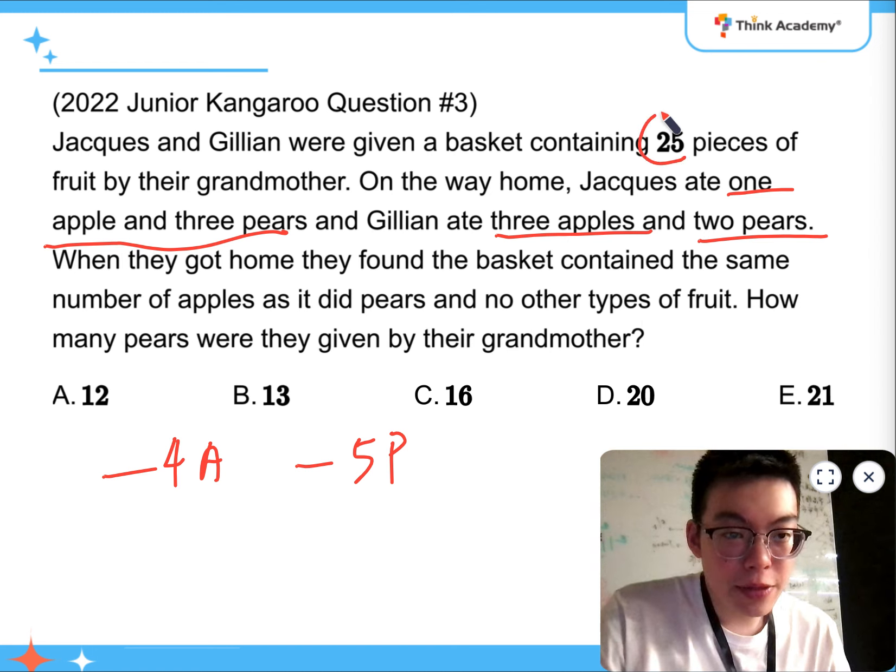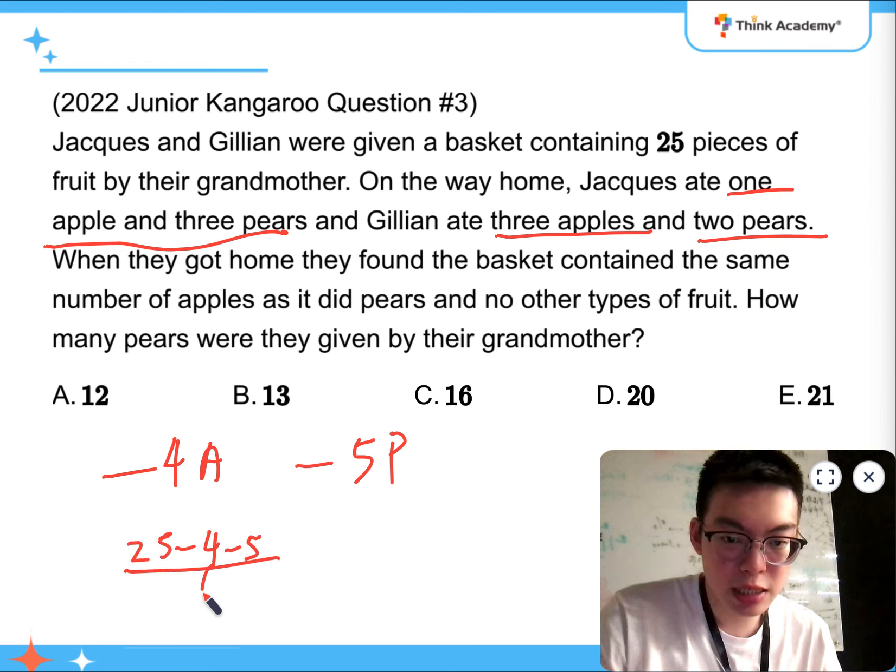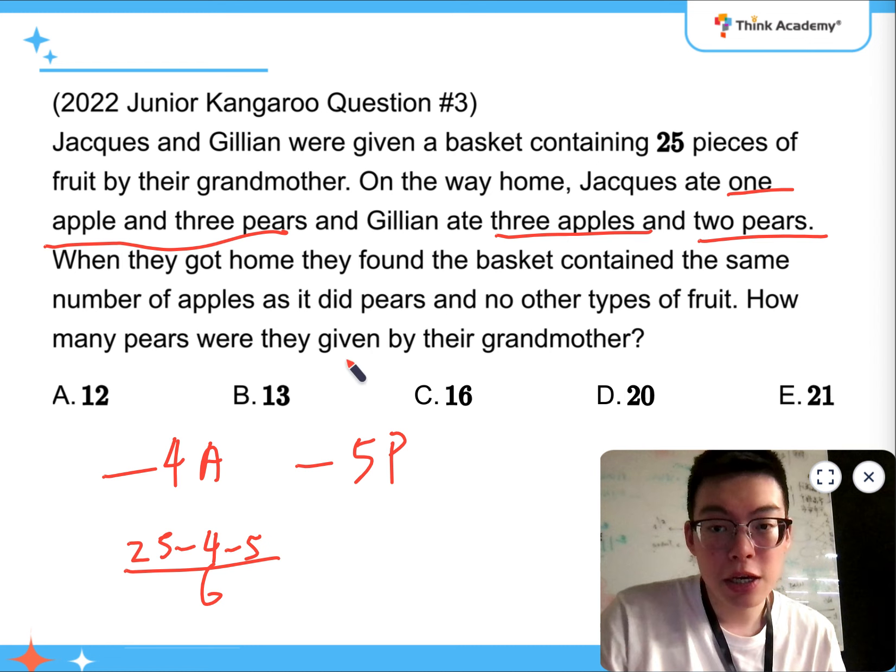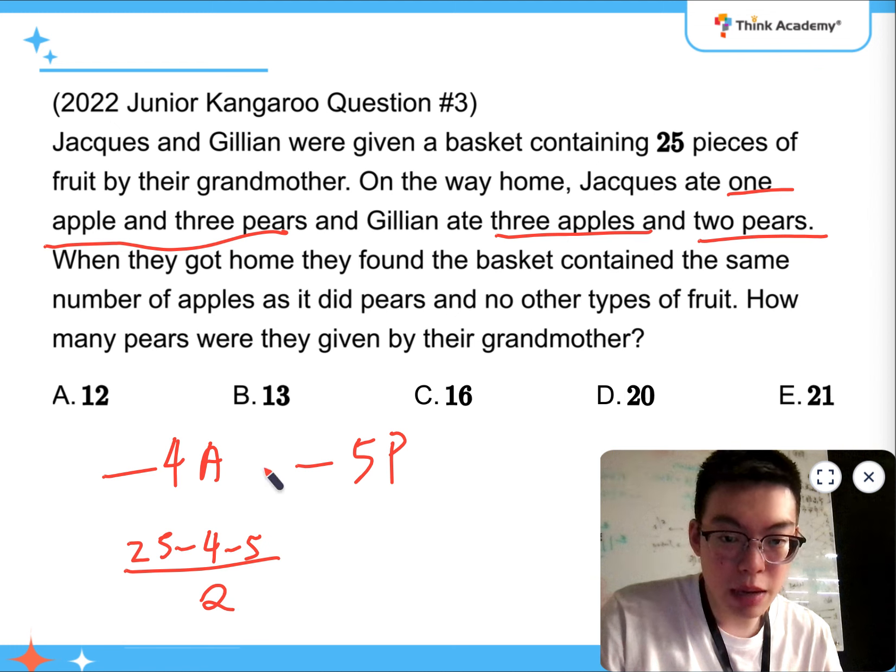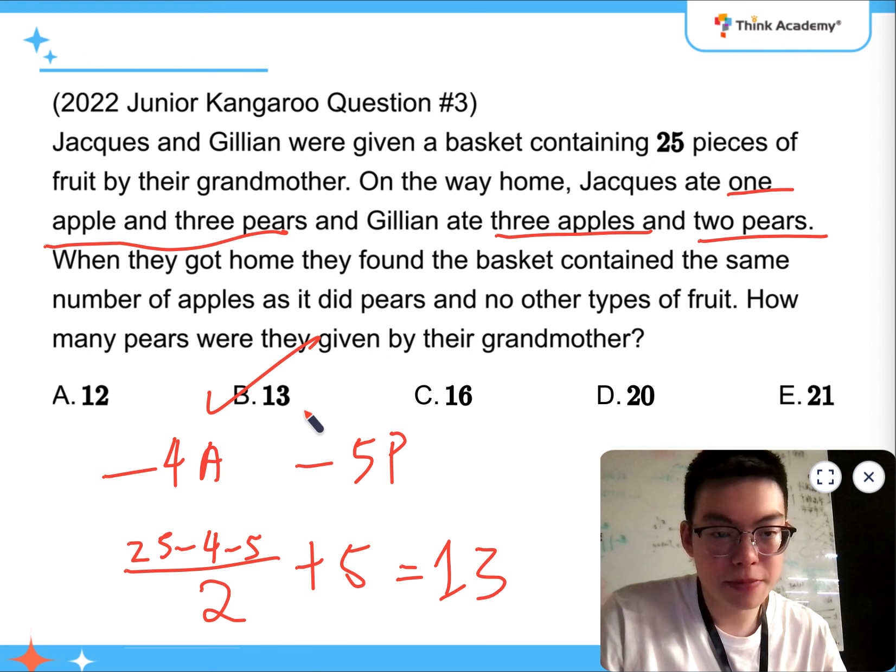So, all together, there's 25. Take away 4, take away 5. That's 16. 16 divided by 2, that's 8. So, now, there are 8 pears and 8 apples. And, on top of the 5 that's already eaten, that's going to be 13 pears altogether. That's question 3.